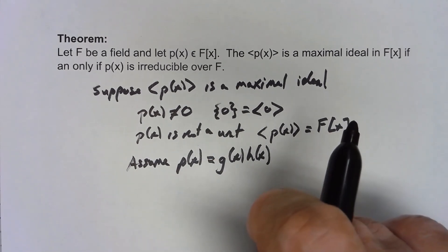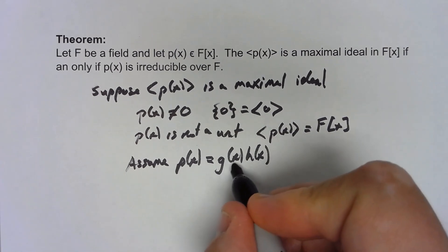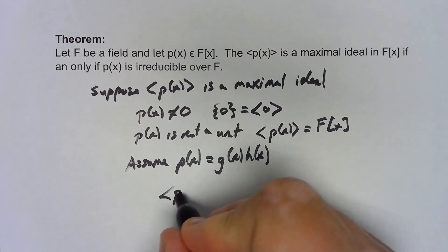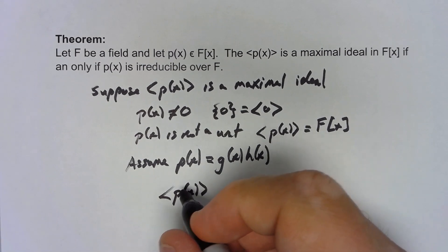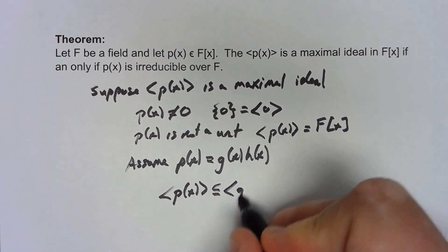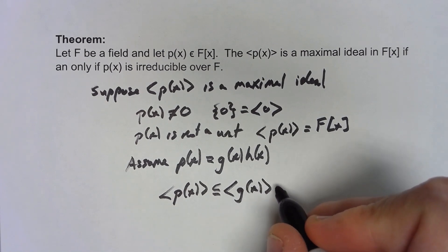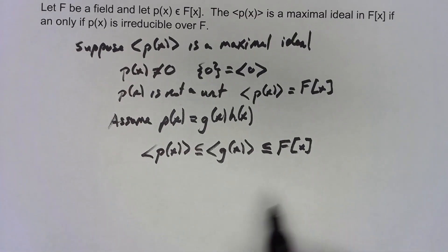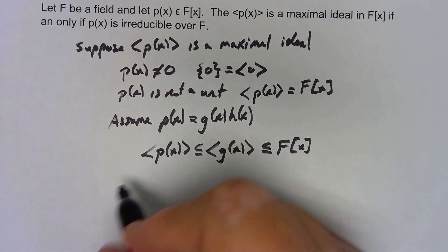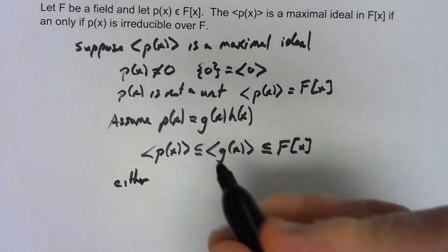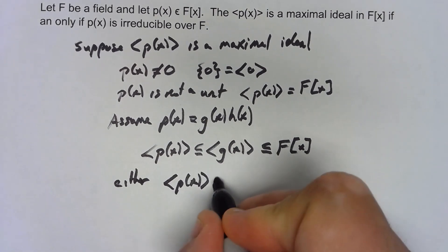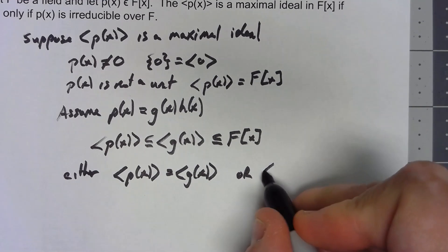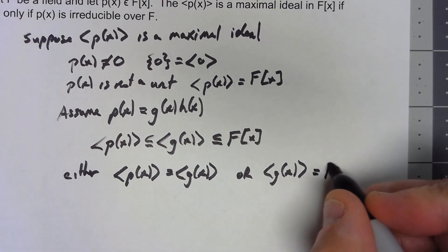So let's think about this in terms of ideals. Because multiplying h(x) times g(x) gives us p(x), that must mean that the ideal generated by p(x) is contained within the ideal generated by g(x) is obviously contained within F[x]. But by definition of maximal ideal that must mean that either